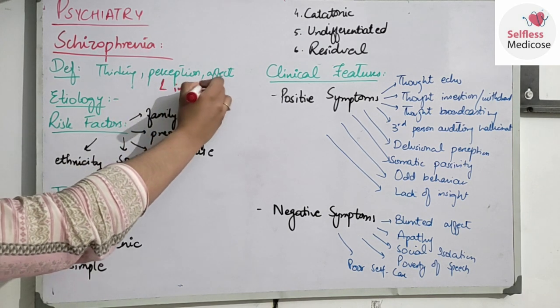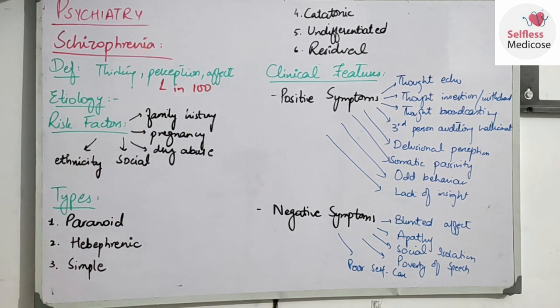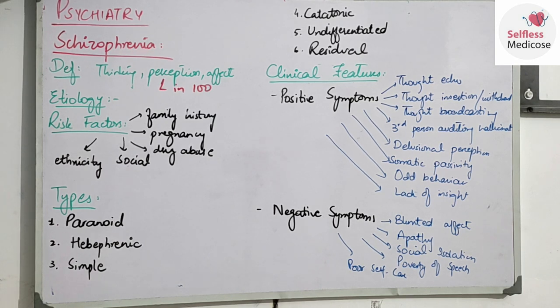The onset is in the teenagers and young adults, but in the early 20s it will be more full blown. Later onset is less common compared to other diseases.